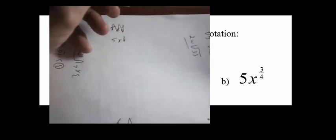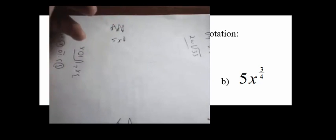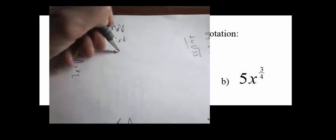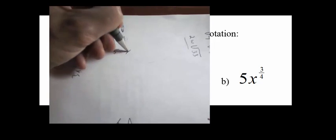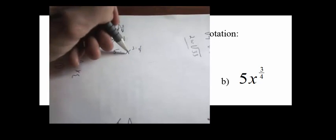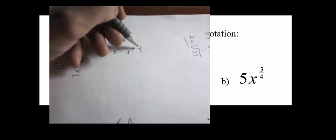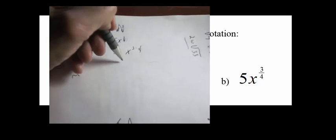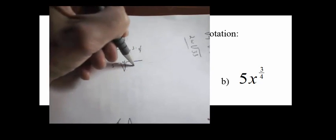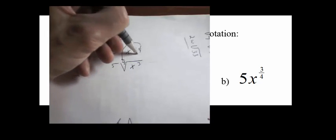For part B: write 5x^(3/4) using radical notation. The 5 is separate from the exponential. The exponent 3/4 means x³ taken to the 1/4 power — in other words, the 4th root of x³. The final expression is 5 times the 4th root of x³.